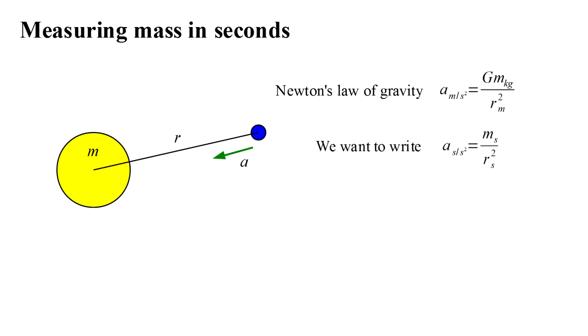We want to write the acceleration a in seconds per second squared as the mass in seconds over the distance in seconds squared. This defines a mass in seconds as G over the speed of light in meters per second cubed times the mass in kilograms. Now, G is small and c is big, so the mass of one second is very large, about 203,000 solar masses.